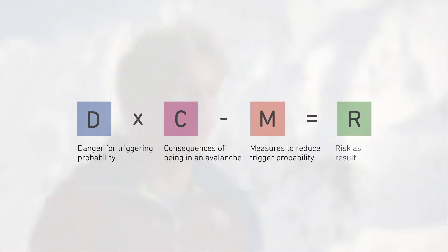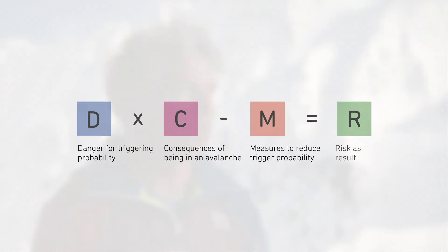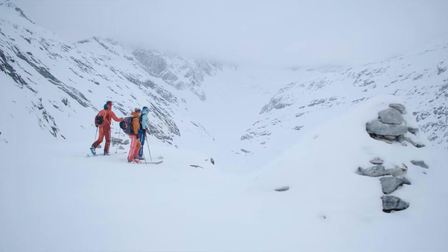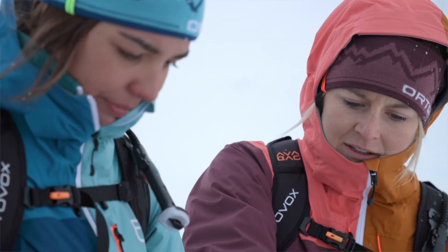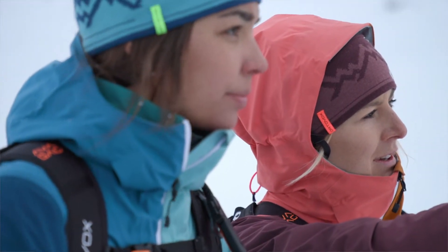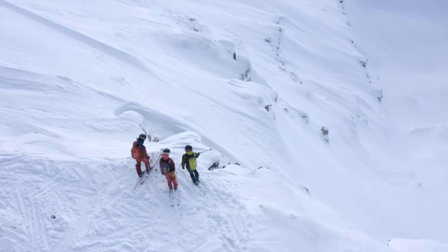The D stands for danger — the probability of avalanche release. We have to address the question: how probable is it that a snow slab could be triggered here on this slope?